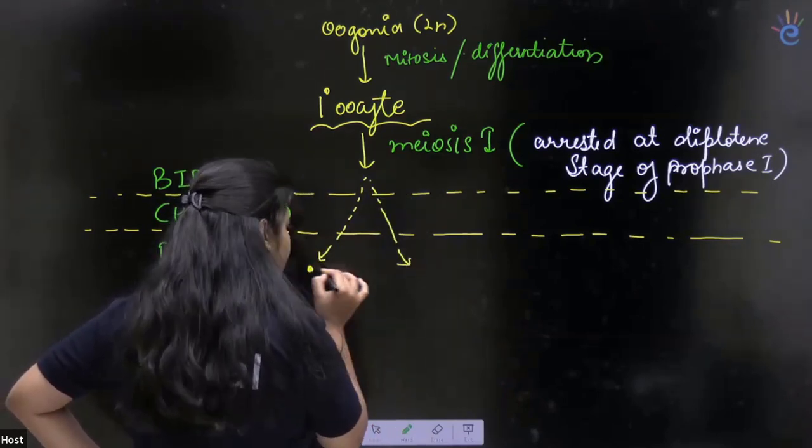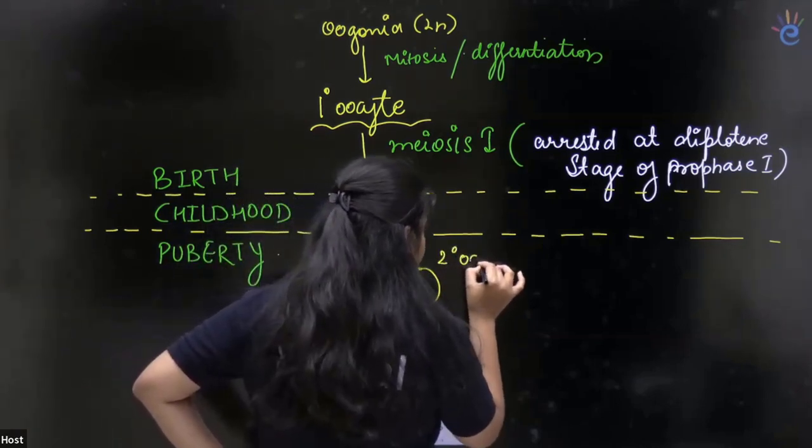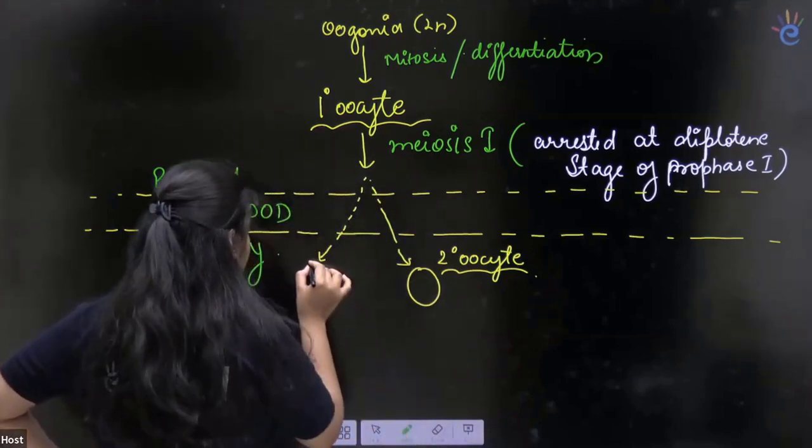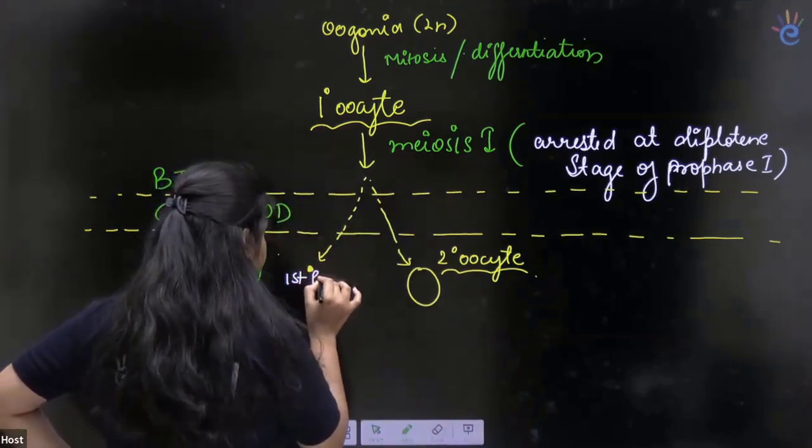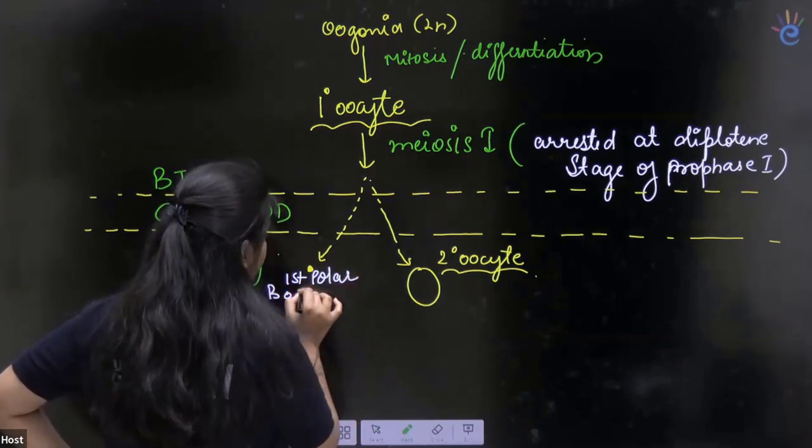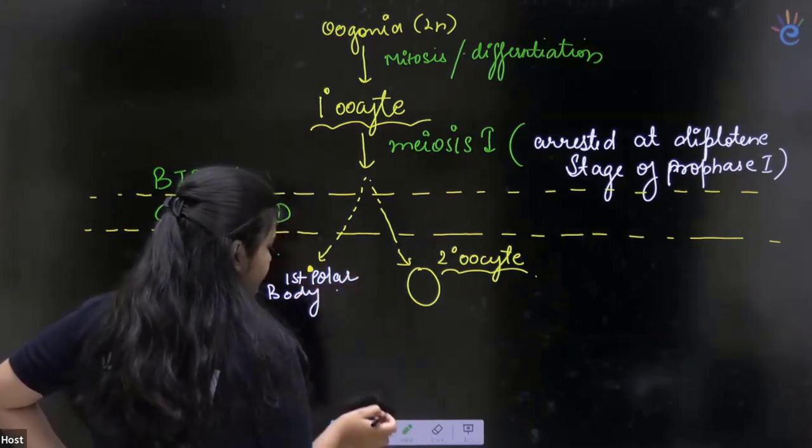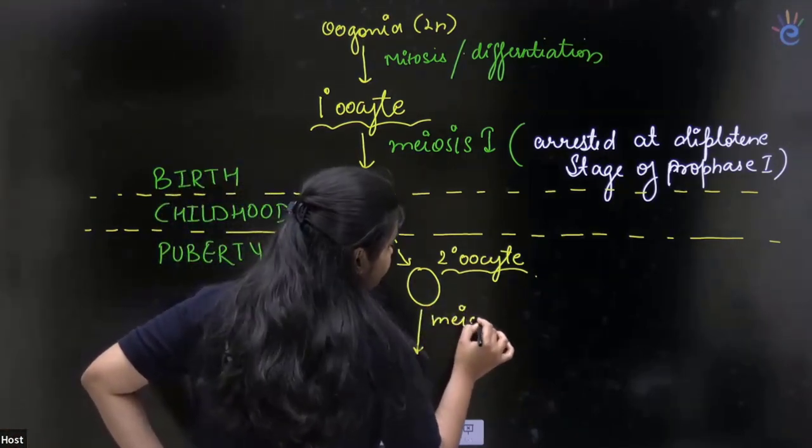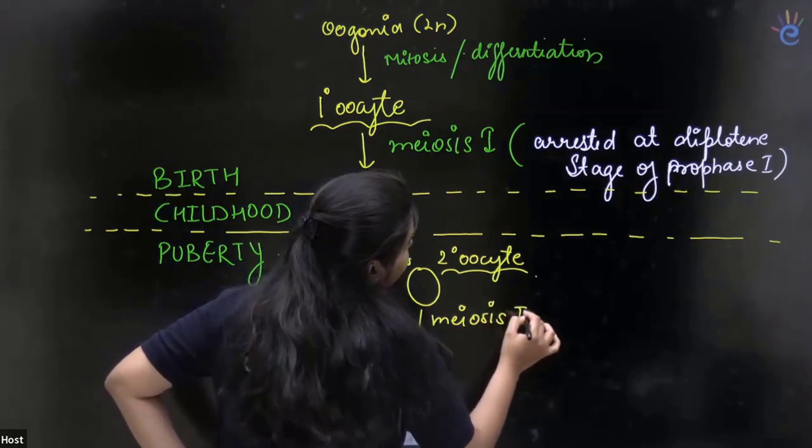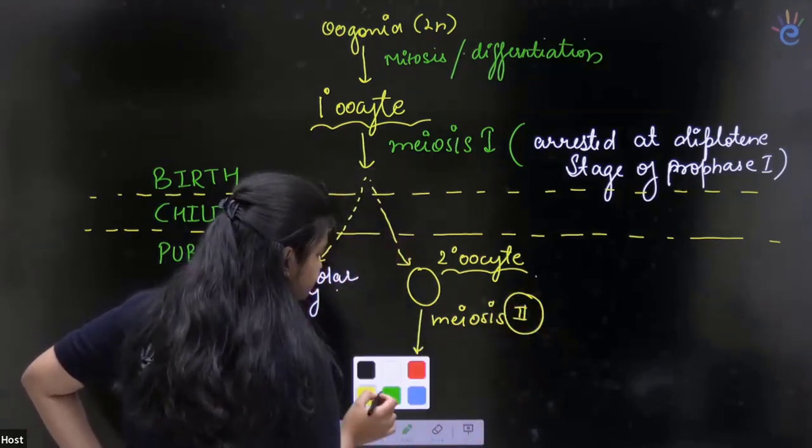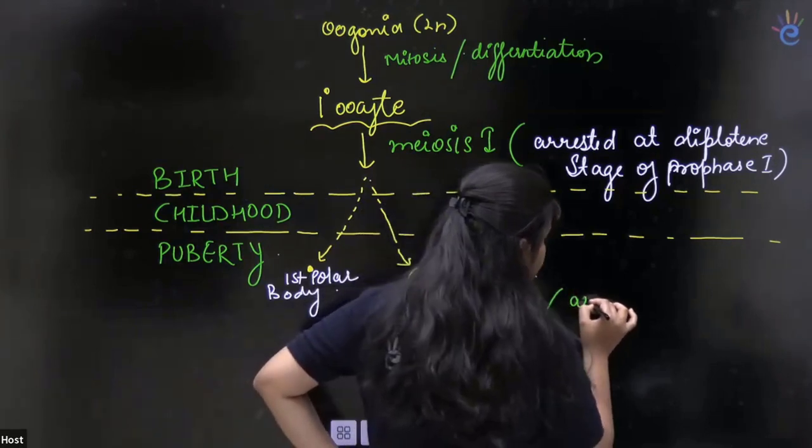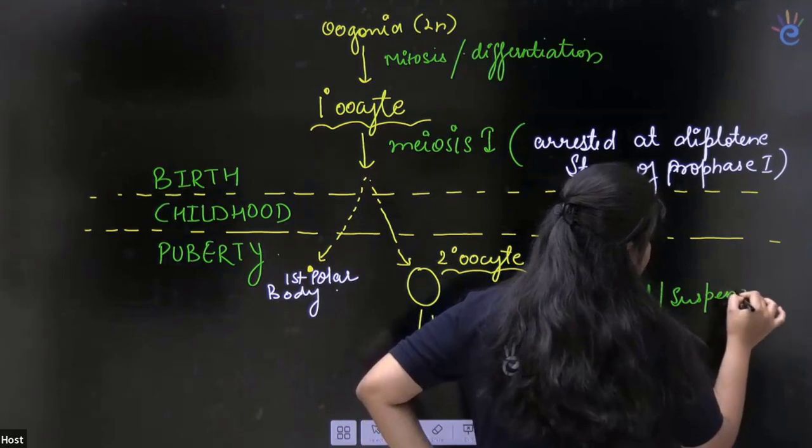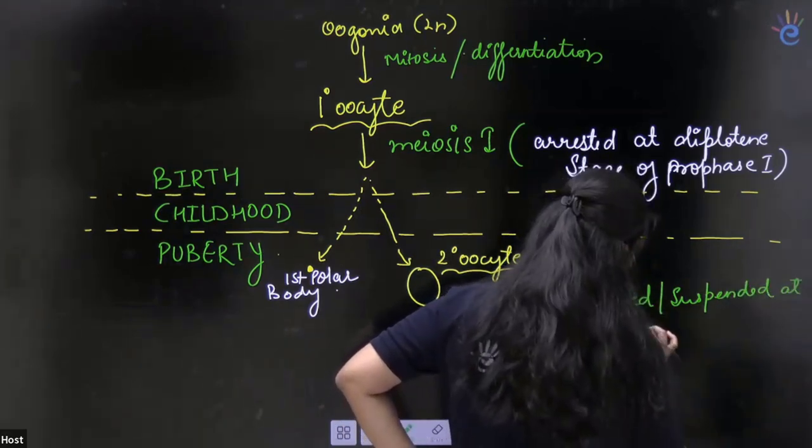This makes another polar body and this makes a secondary oocyte. Now it starts meiosis 2, the secondary oocyte, but then it gets arrested or suspended at metaphase 2.